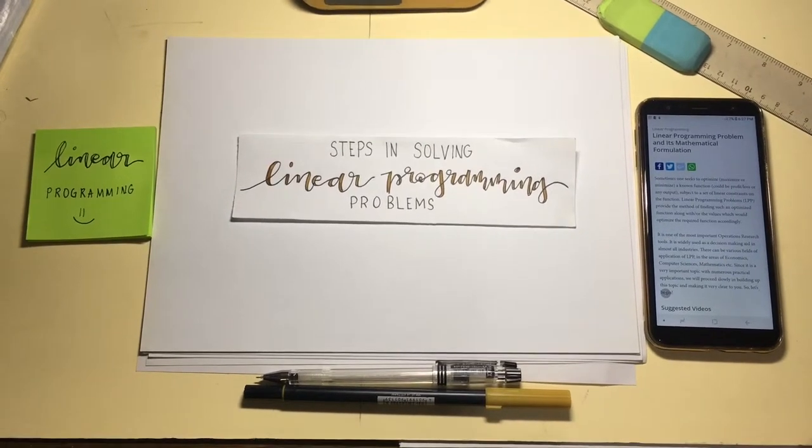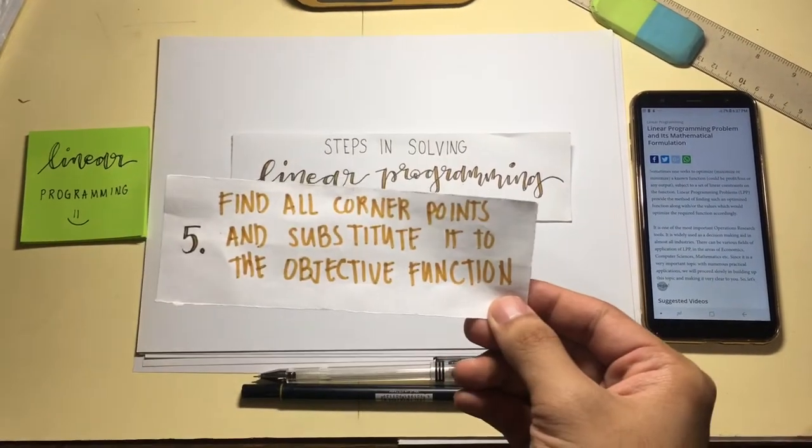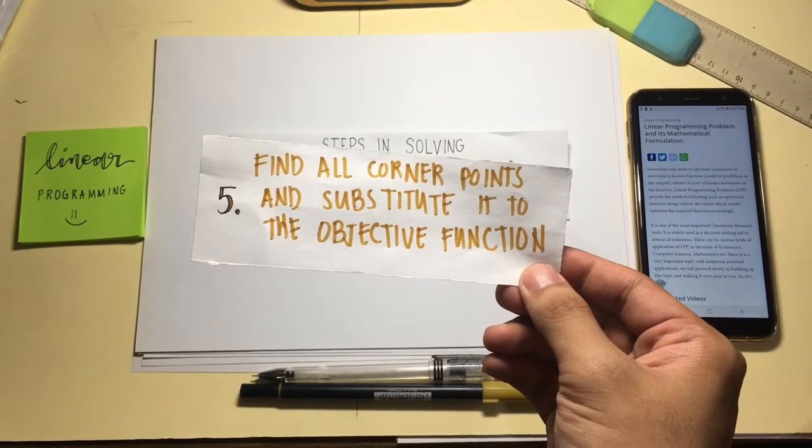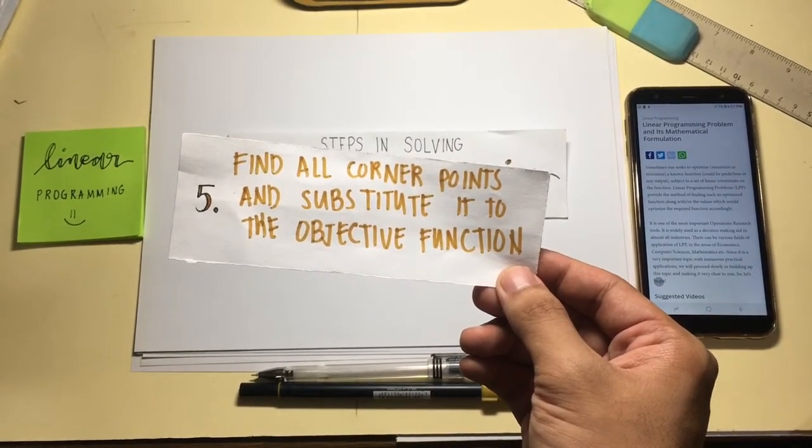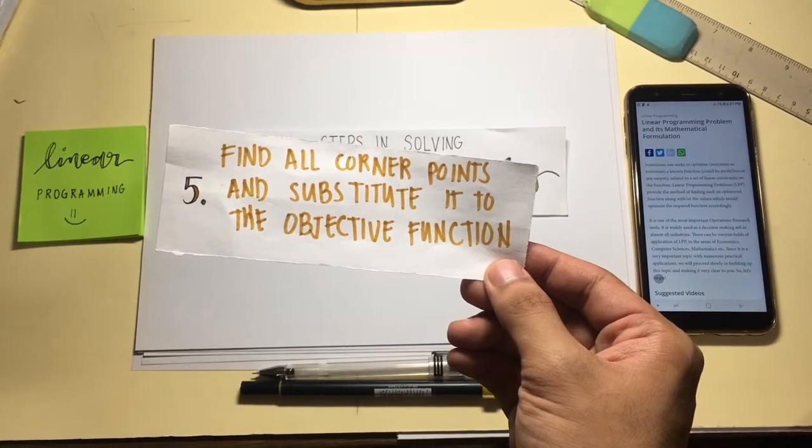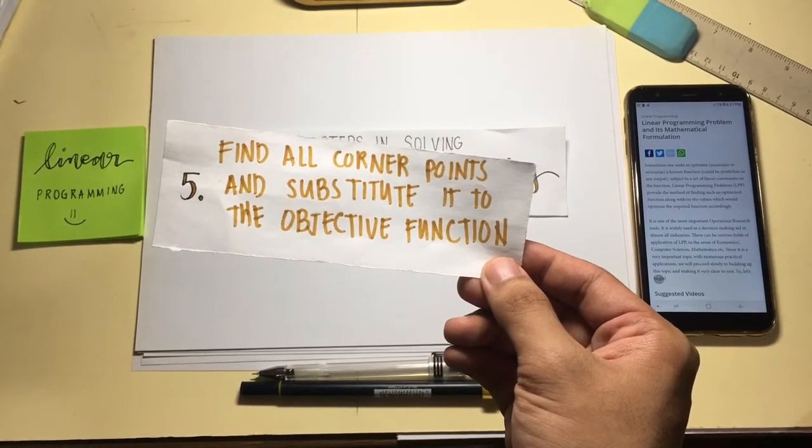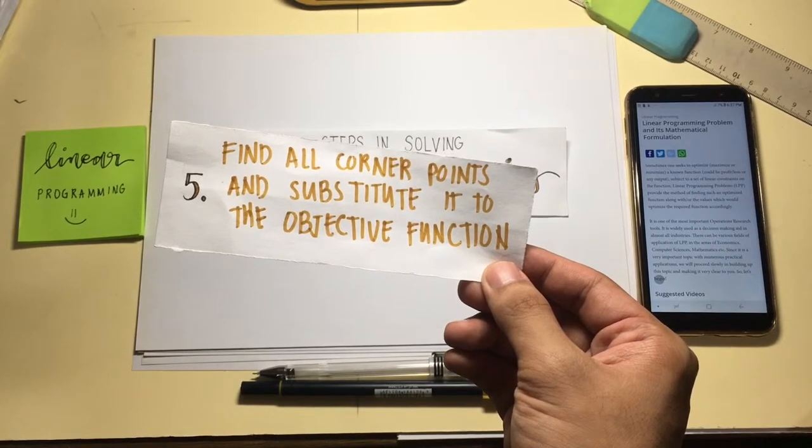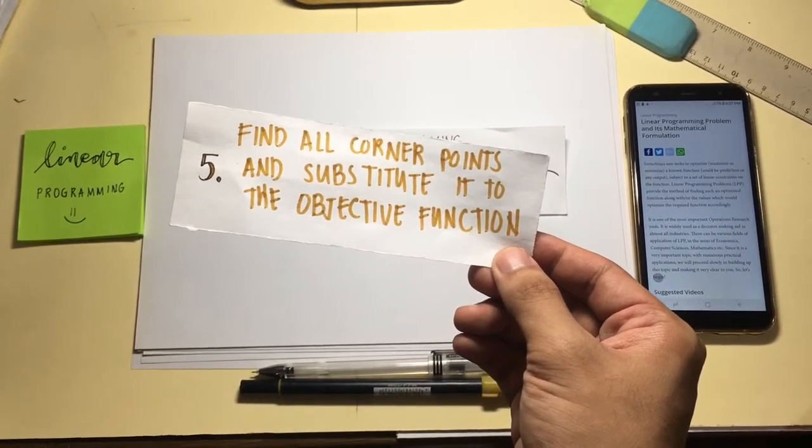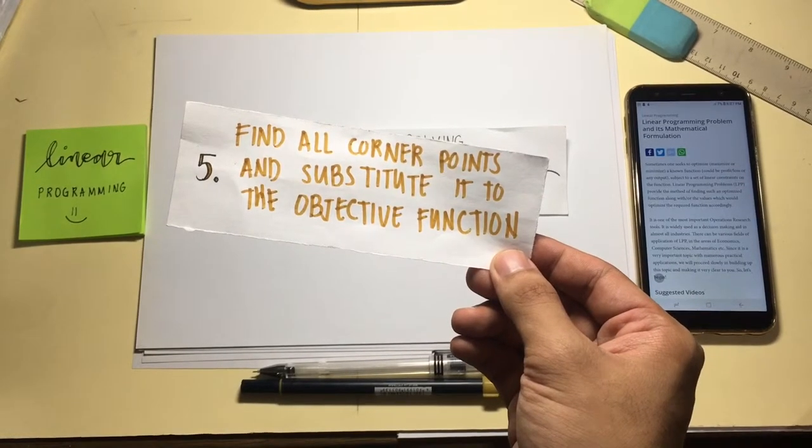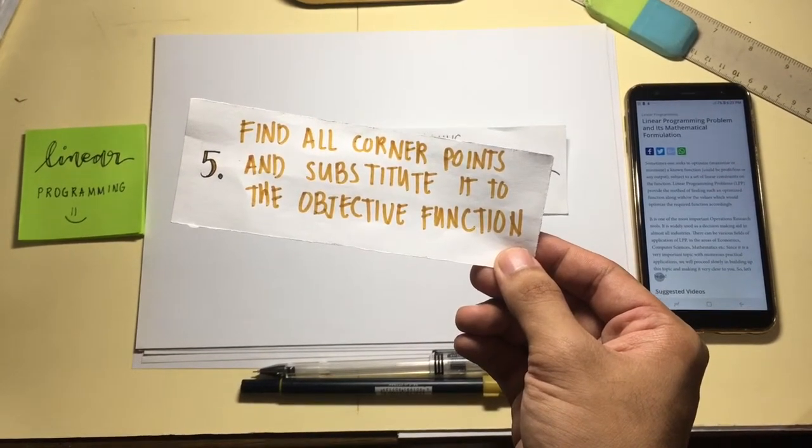Final step is to find all corner points and substitute it to the objective function. After graphing the constraints, we will look for the most shaded region of the graph. This will provide the points that we will use to substitute in our objective function previously done on step 3, for us to be able to get the most optimized outcome that we need.